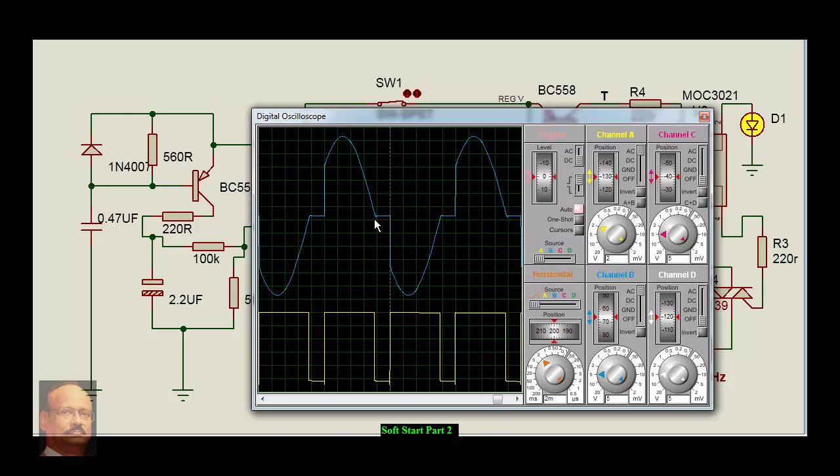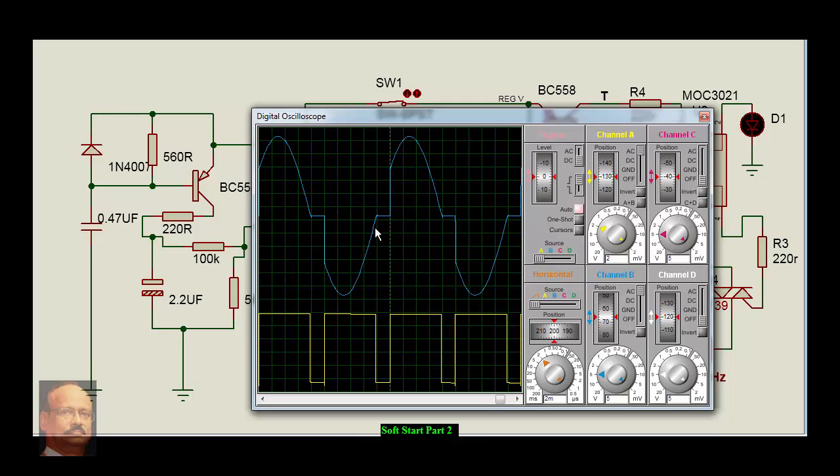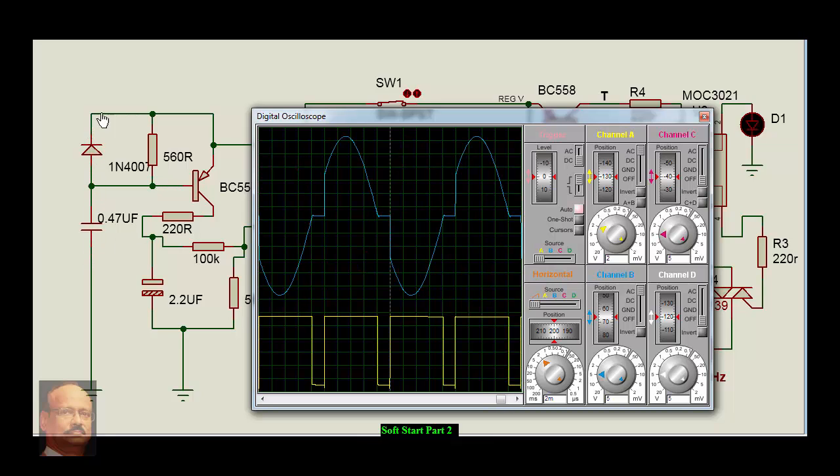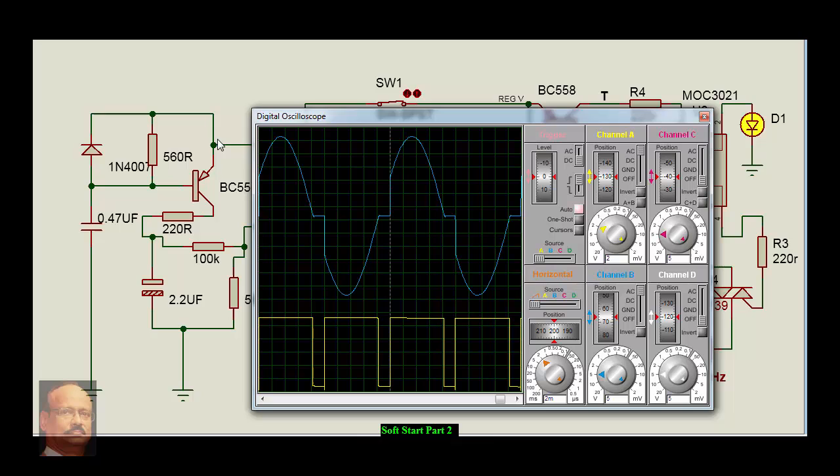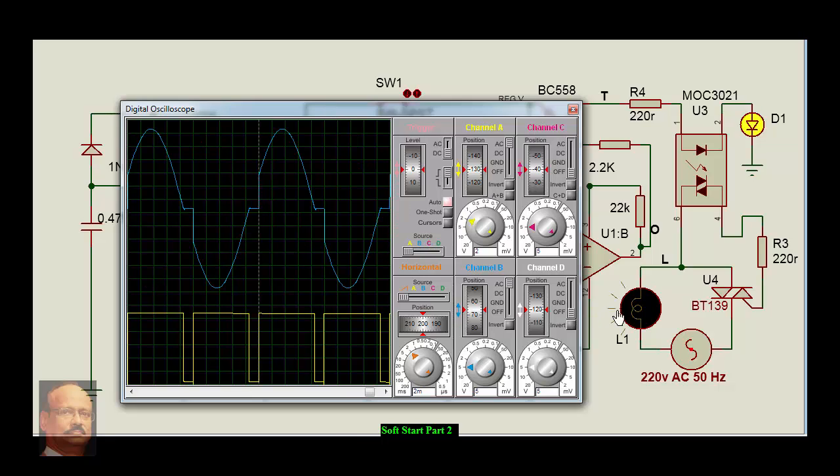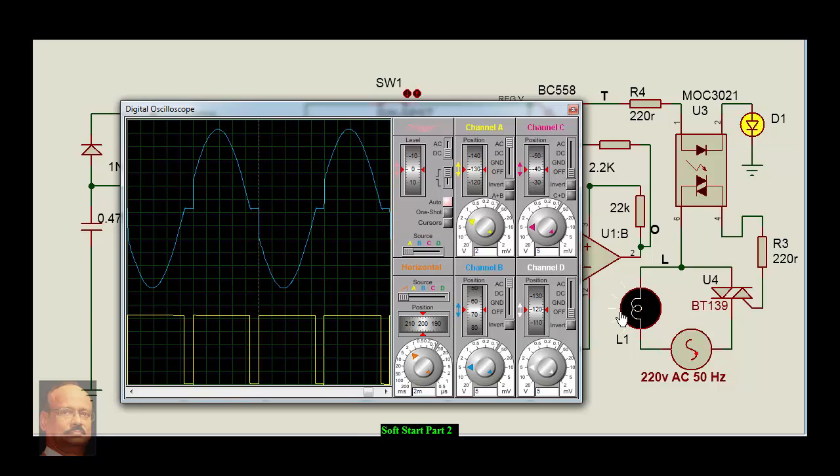After we switch off, this capacitor gets discharged by this diode through the supply. That is the basis on which the soft start of induction motor works. However, in place of this lamp load, an induction motor can be used with the snubber network, which has been explained in separate videos. The function of the triac and the opto-isolator are also explained in separate videos. If you like it, please subscribe. Thank you.